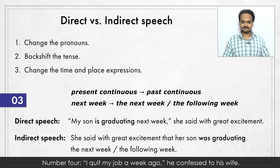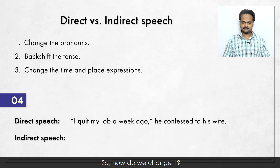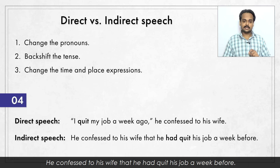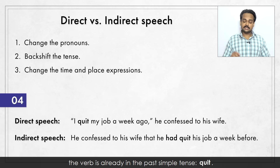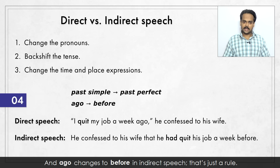Number four: "I quit my job a week ago," he confessed to his wife. "Confessed" means that he admitted the truth to his wife. He confessed to his wife that he had quit his job a week before. Notice that in the direct quote, the verb is already in the past simple tense – "quit". When we backshift a past simple tense verb, it changes to the past perfect – "had quit". And "ago" changes to "before" in indirect speech.